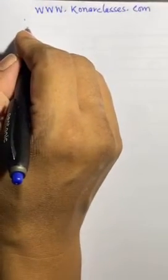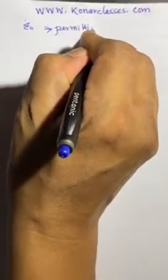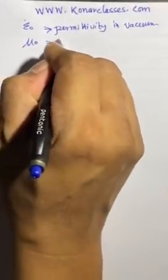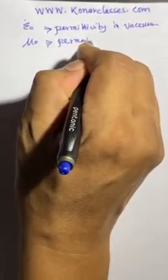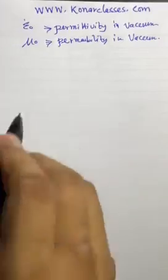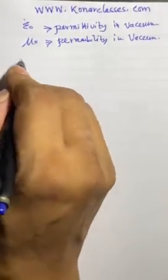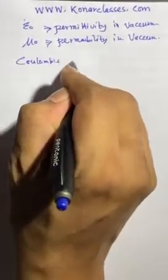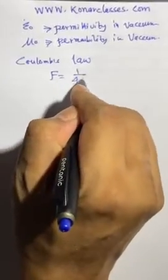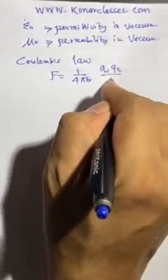Next question: we need to find out the dimension of epsilon naught, permittivity in vacuum. Permittivity comes into Coulomb's law. So from Coulomb's law, we know F equals 1 by 4 pi epsilon naught, q1 q2 by r square.